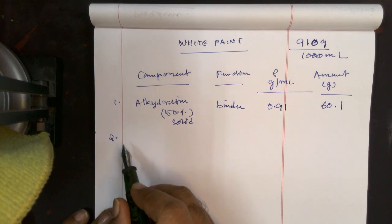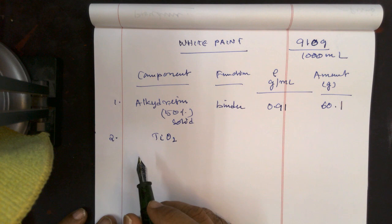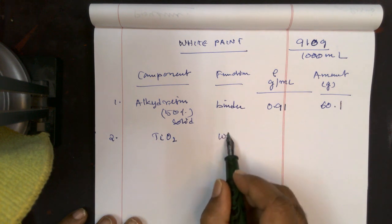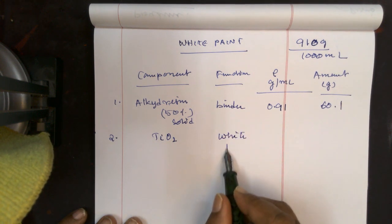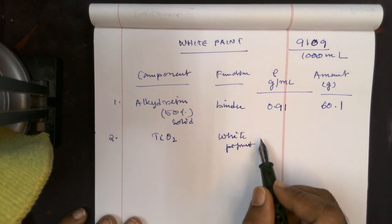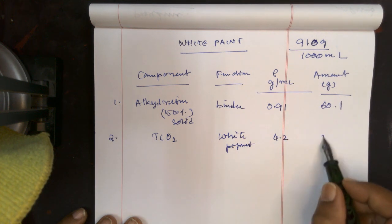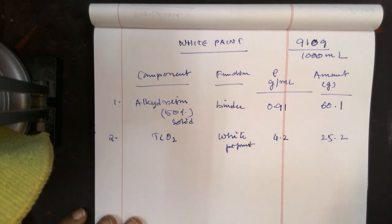And as the second part, the paint contains titanium dioxide. That is the white pigment. And it has the density 4.2, and 25.2 is the weight taken.